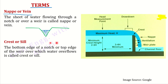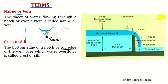Next is crest or sill. Jo yeh top portion hai aapke weir ka, ya phir aapke notch ka — yeh wala portion of the notch ya phir yeh wala portion of the weir — isko hum kya bolte hain? Crest. The bottom edge of a notch — notch ka yeh wala portion — is known as crest. Aur jo top edge hai weir ka — so wear ka top edge yeh hai — this is known as a crest or sill, over which the water overflows is known as a crest or sill.